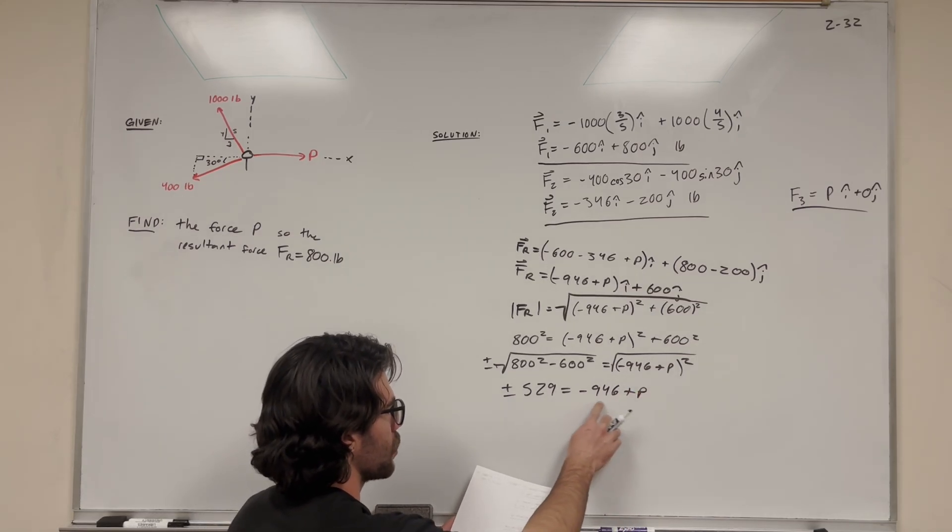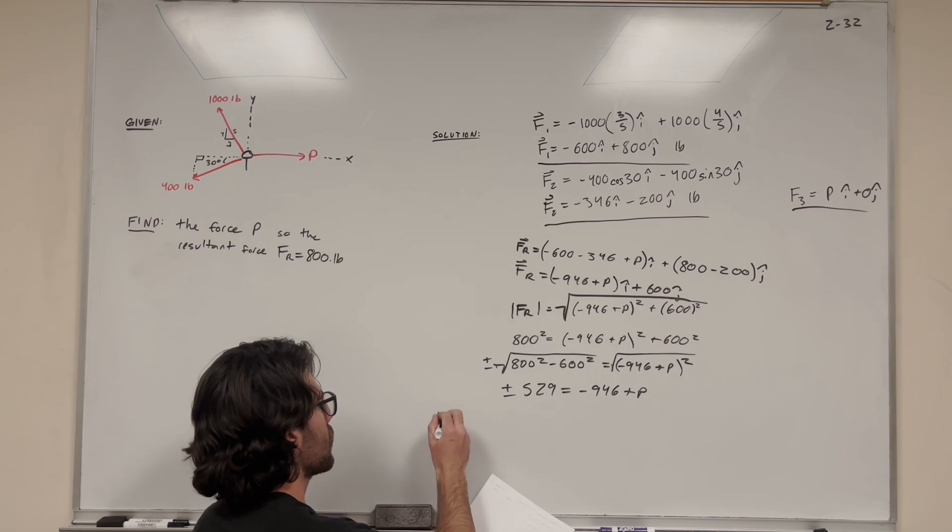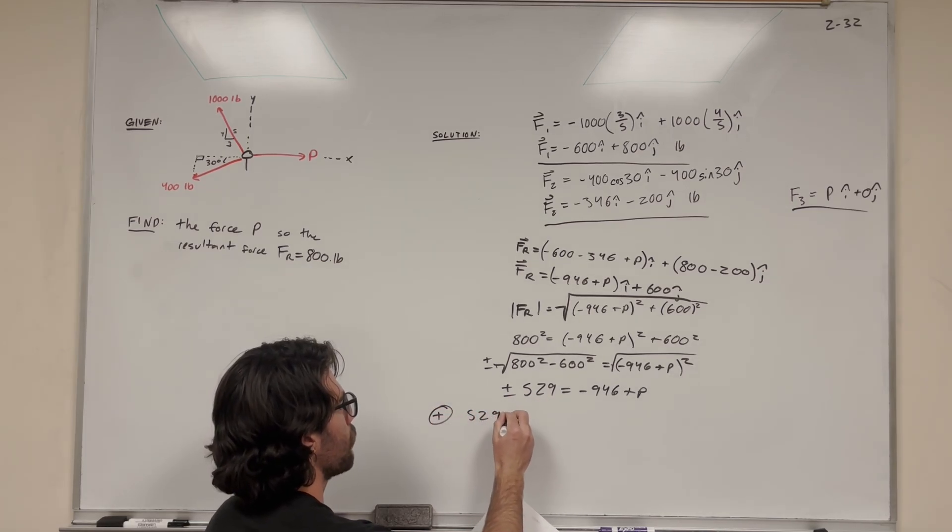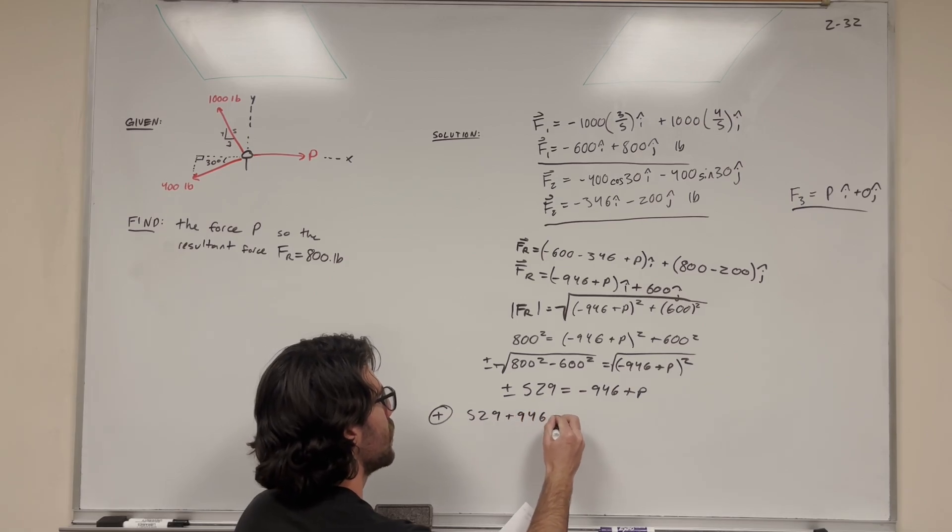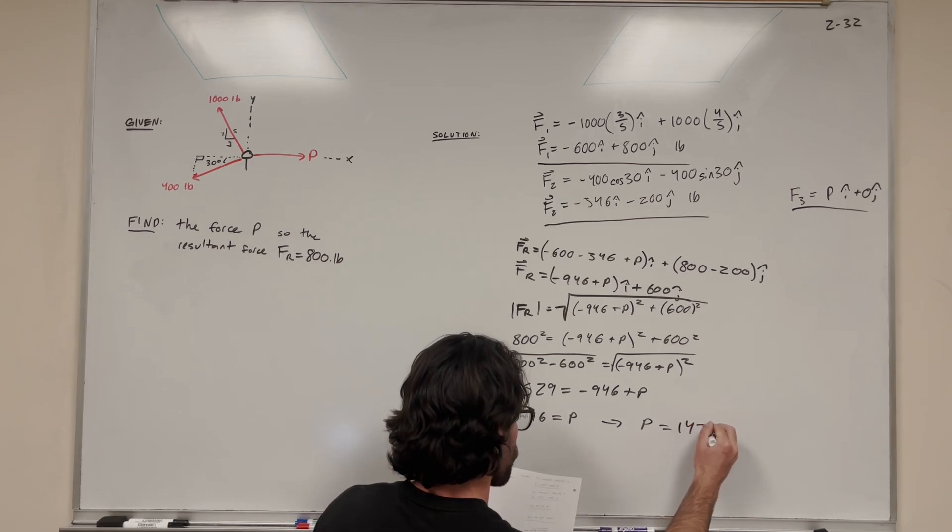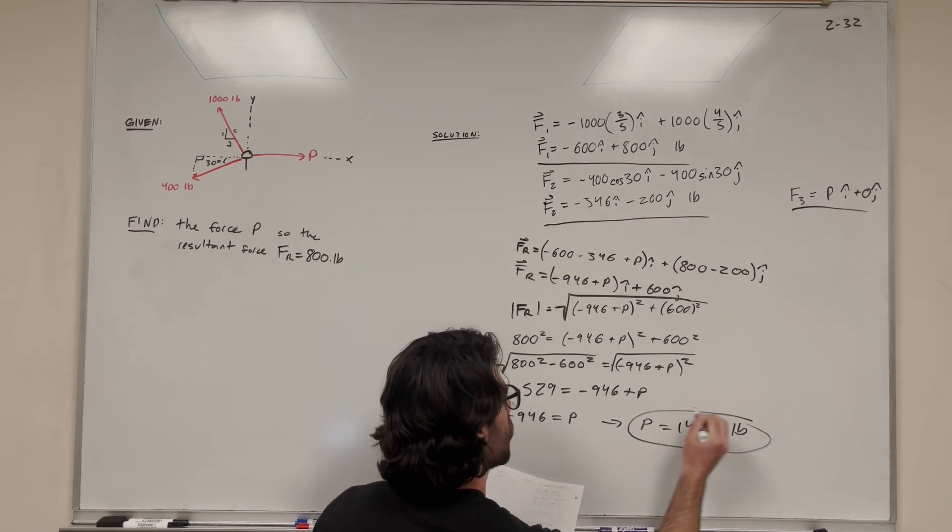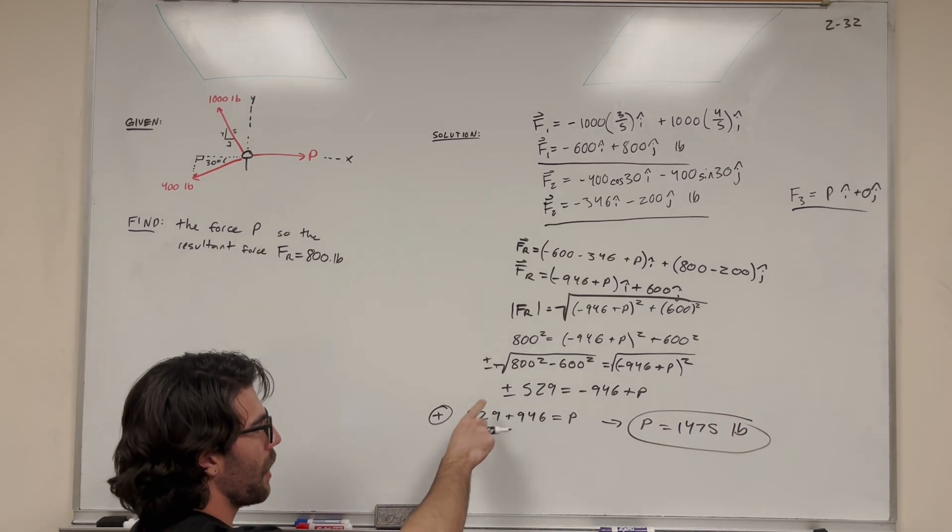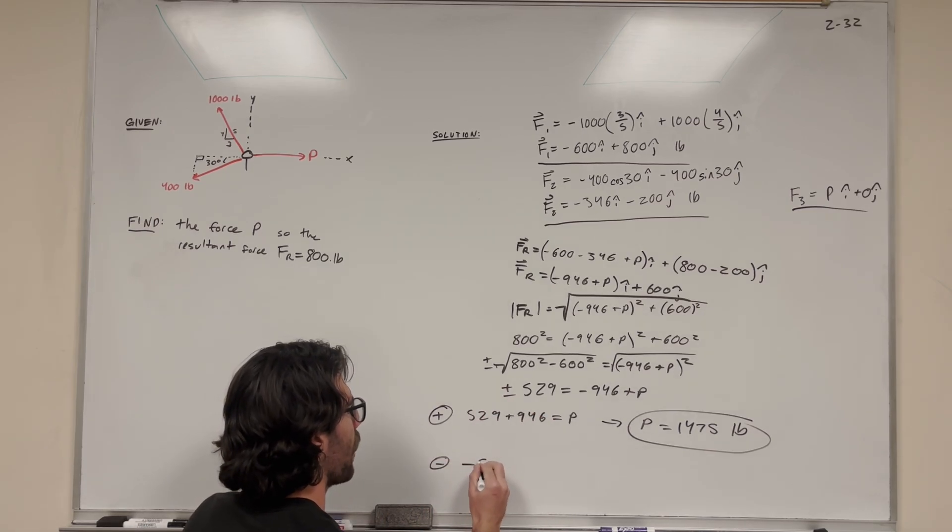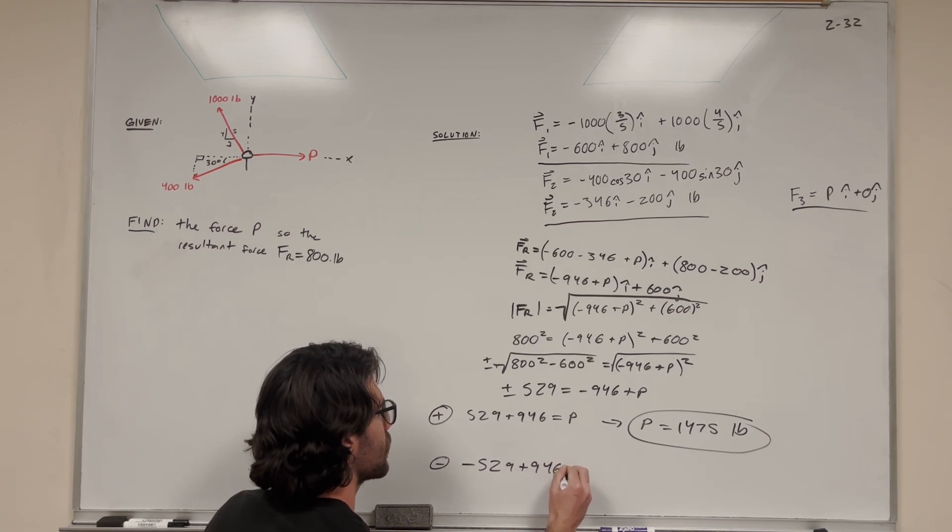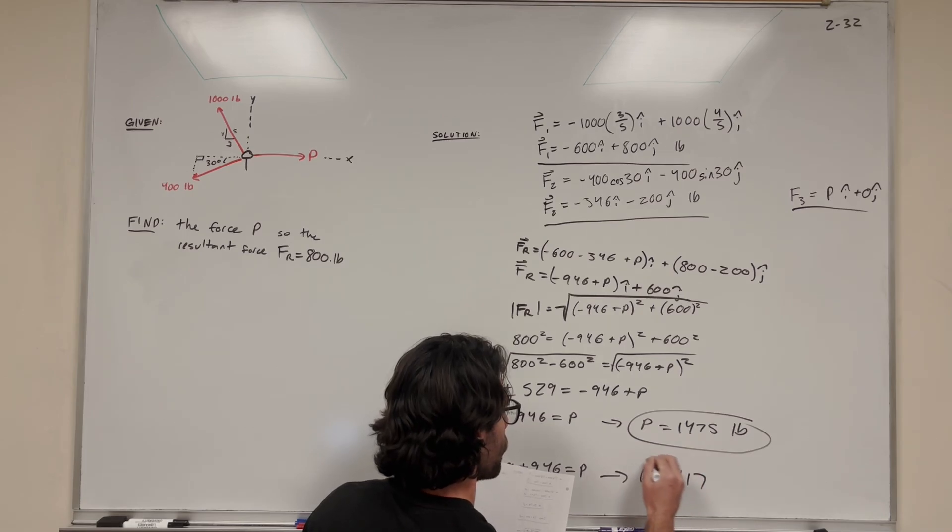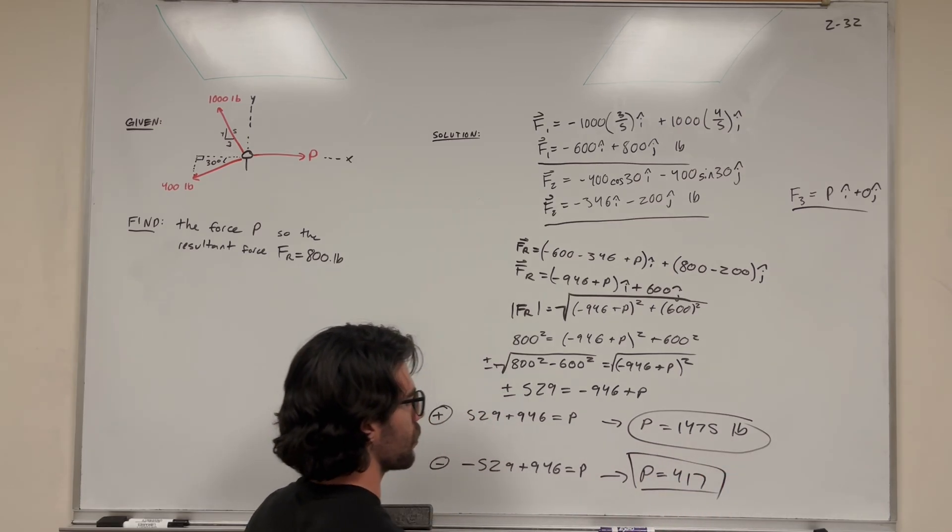So we have two situations, either a plus or a minus. For the plus, if we have plus 529, we get 529 plus 946 equals p. That gives us p equals 1,475 pounds. That's one situation, but remember we have plus or minus, so we have two situations. For the minus, we have negative 529 plus 946 equals p. We get p equals 417. So those are two answers for p.